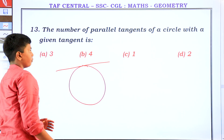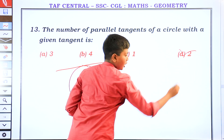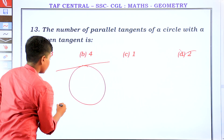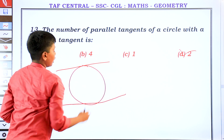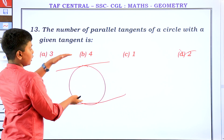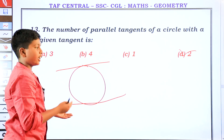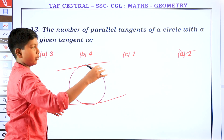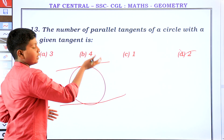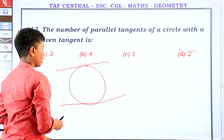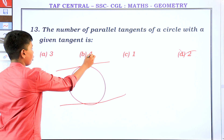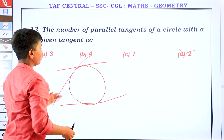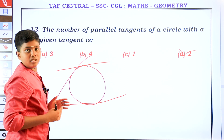There are two. One tangent is above and one is below — the other two are parallel. So there are two parallel tangents to a circle with respect to a given tangent.